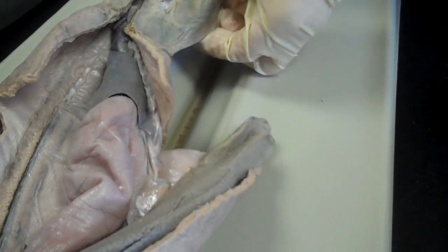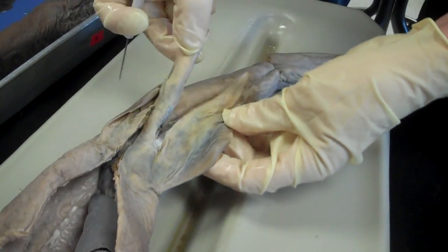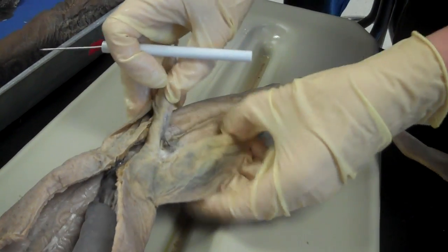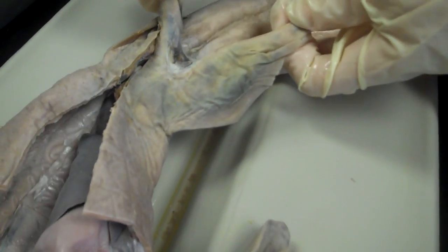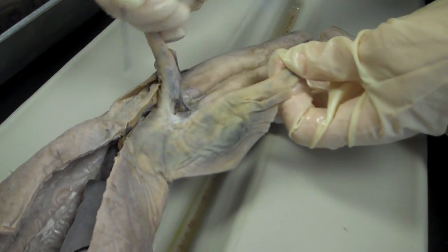Alright, so you can tell this is a male shark by the claspers here attached to the pelvic fins. This opening here is the cloaca. That is a common opening for the excretory system, reproductive system, and digestive system.